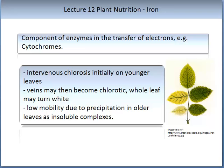Iron is an important component of enzymes in the transfer of electrons, such as cytochromes. When iron is deficient, you can get interveinal chlorosis, initially on younger leaves. You may observe that veins become chlorotic and the whole leaf may turn white. Low mobility due to precipitation in older leaves as insoluble complexes is something to look out for. Here we have a rose leaf subjected to severe iron deficiency.